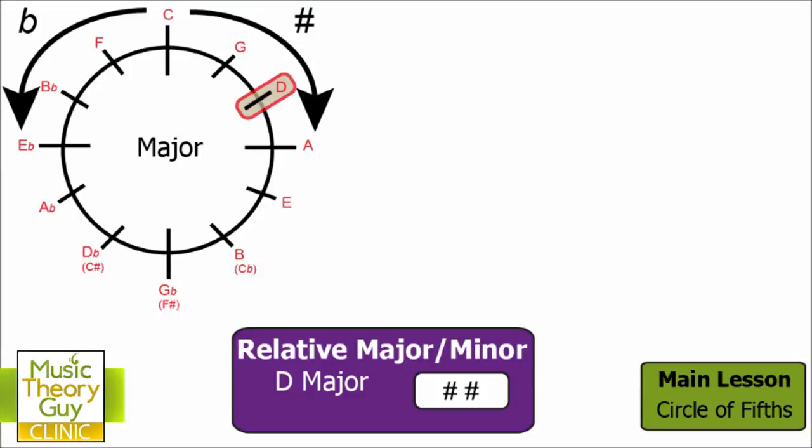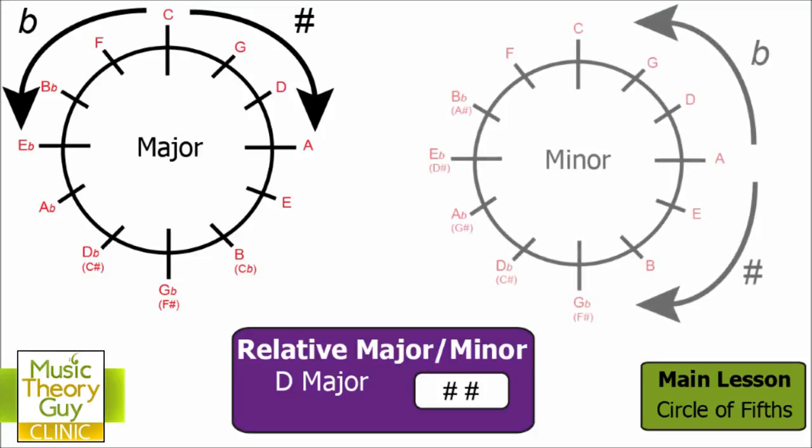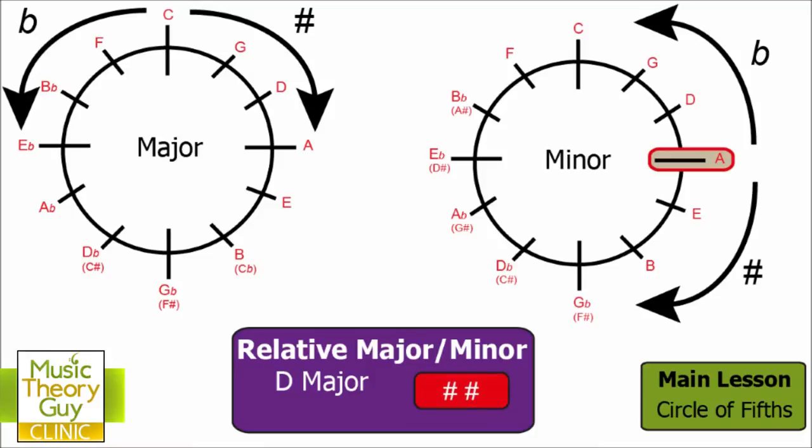So remember, we're here to find out the relative minor of D major. What we do, we have to look at our minor circle of fifths. So here it is. And we always start on an A on the minor circle of fifths. And because we know that D major has got two sharps in it, we need to count round on the sharp side of our circle till we get to two sharps. So let's just work this out.